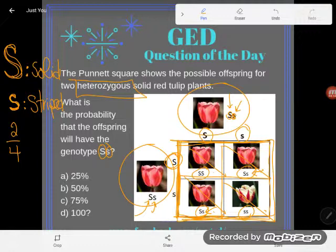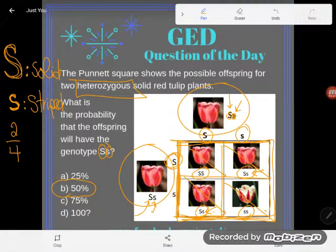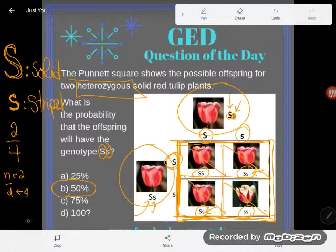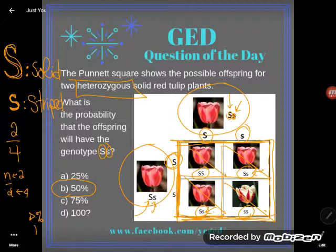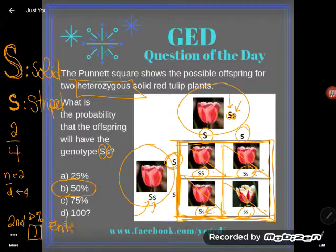Now lots of you can do percents in your heads — I certainly hope you know that two out of four is the same as half, or 50%. But if you're struggling, you can easily figure out the percent on your calculator by typing in the fraction two over four using the fraction button, putting a two on top and a four on the bottom. Then use the convert to percent button — it's in green over the closed parentheses, so you press Second first, then close parentheses, then Enter. It spits out 50%.